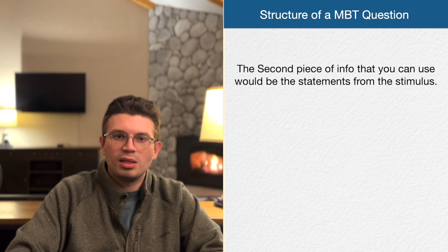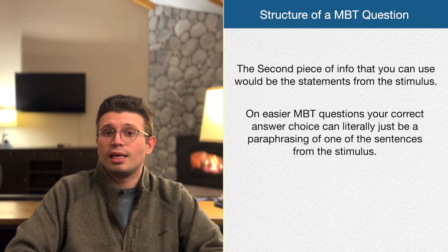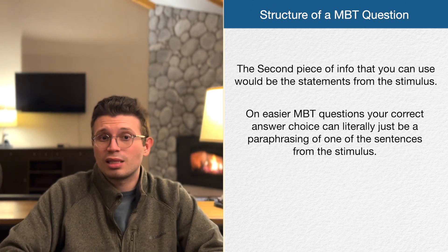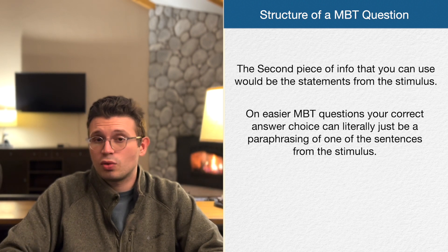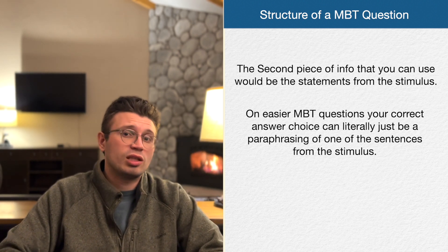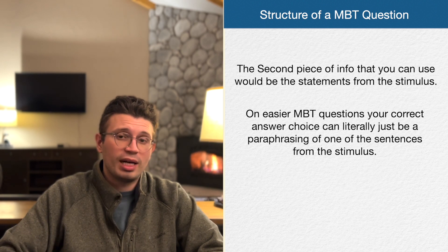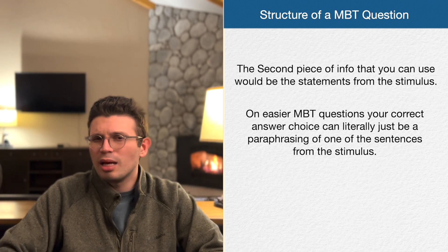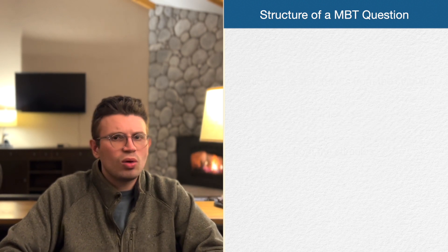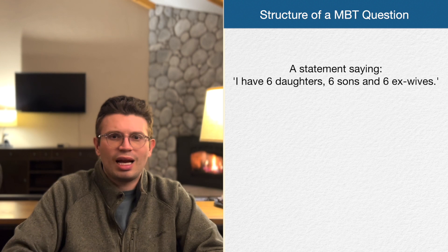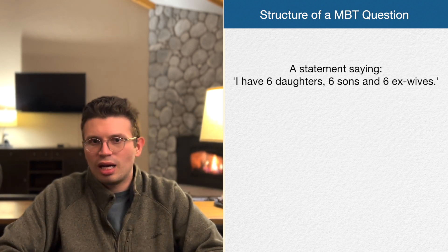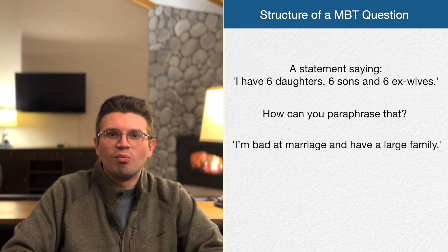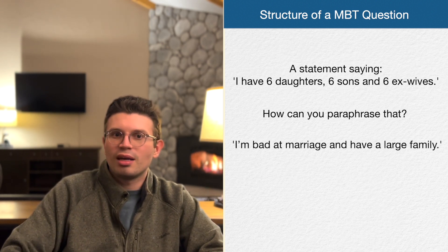The second way is using statements directly from the stimulus. On easier must be true questions, your correct answer choice can literally just be a paraphrase of one of the sentences from the stimulus — that's completely fair game. There's no reason to jump on an inference bandwagon immediately. If I have a statement saying I have six daughters, six sons, and six ex-wives, I can paraphrase that as 'I'm bad at marriage and I have a large family' — both statements say the same thing.